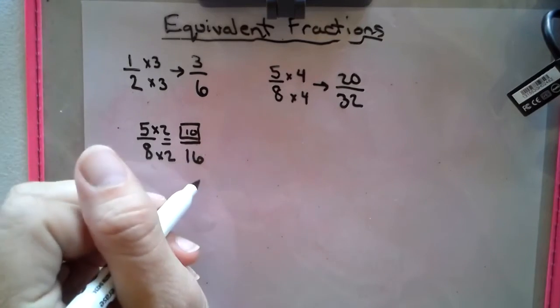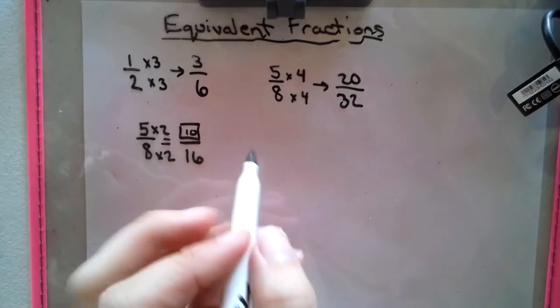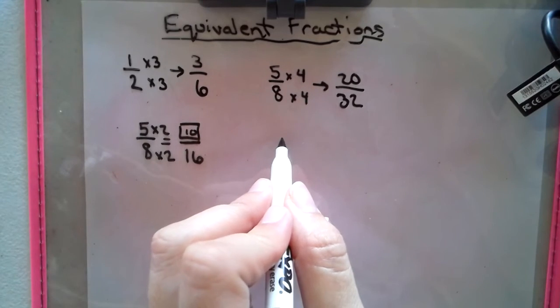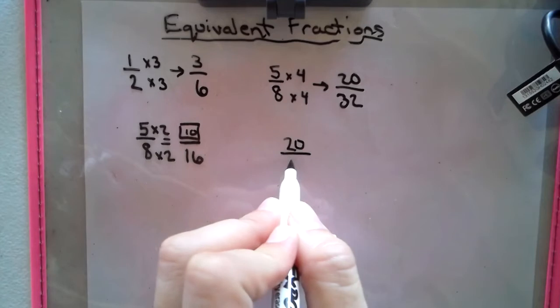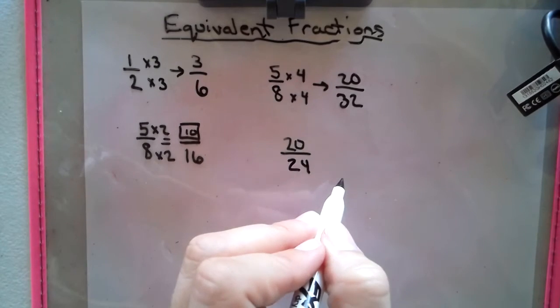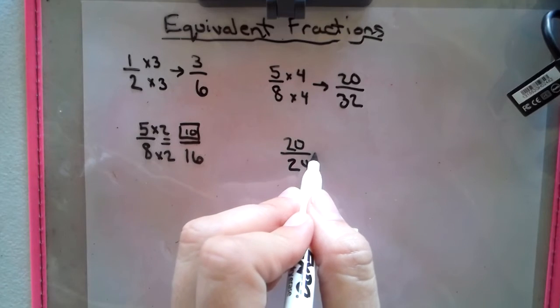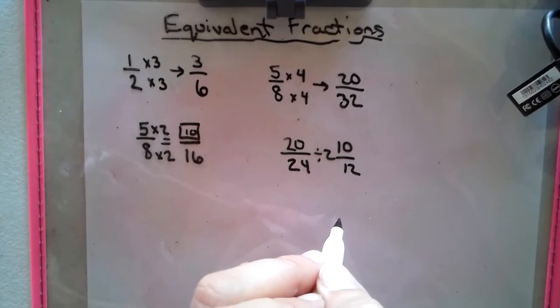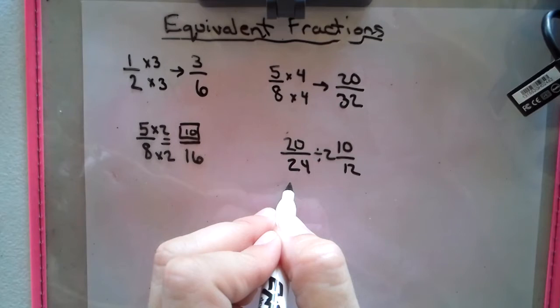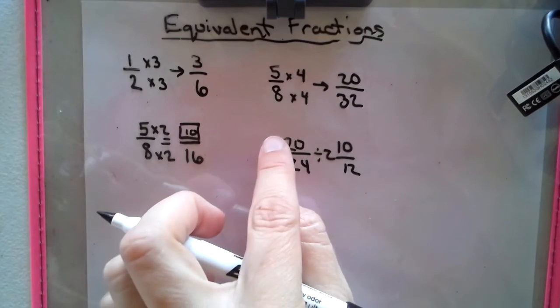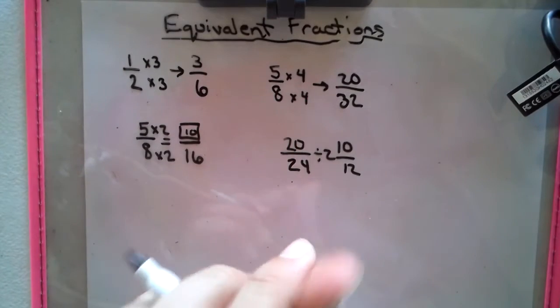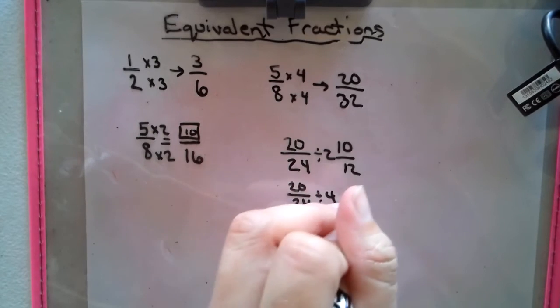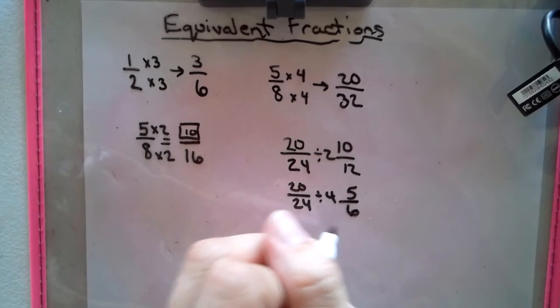So an equivalent fraction of 5/8 is 10/16. Another way that we can show equivalent fractions is we can take a fraction that is not simplified and we could make it in reduced terms. Say I want to divide by 2, and I get 10/12. That's equivalent to 20/24, or I could take 20/24 and I could divide it by 4 and get 5/6. That could be equivalent also.